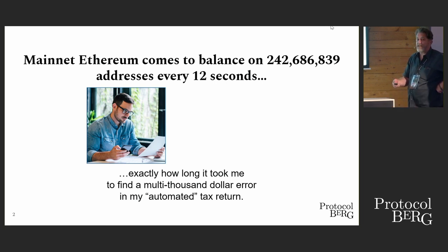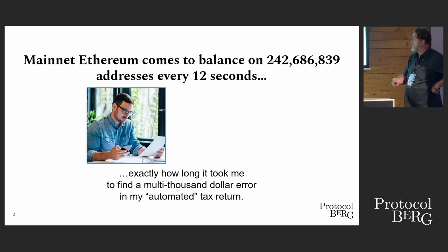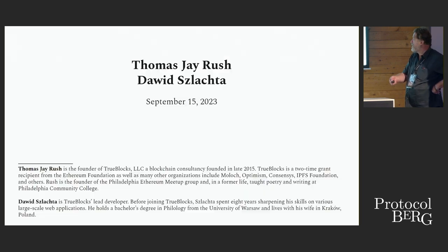12 seconds is exactly how long it took me to find a multi-thousand dollar mistake in my automated tax return that I paid $2,500 for. How many of you have had a similar experience? It comes to balance on all those accounts every 12 seconds — but this is what we actually look like to the rest of the world, because we're telling them we have perfect data and the data is just crazy.